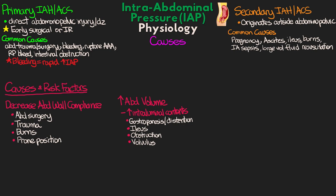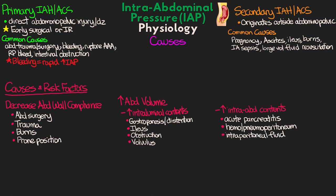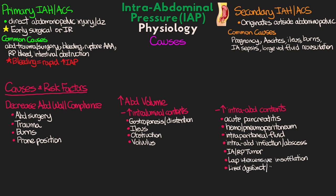Another subgroup is things that increase intra-abdominal contents: acute pancreatitis, hemo- or pneumoperitoneum (blood or air getting into the abdomen), intraperitoneal fluid collections, intra-abdominal infection or abscess, intra-abdominal or retroperitoneal tumors, laparoscopy with excessive insufflation pressures, liver dysfunction or cirrhosis with ascites, and peritoneal dialysis — all increasing the volume of the abdominal cavity and leading to elevations in abdominal pressure.